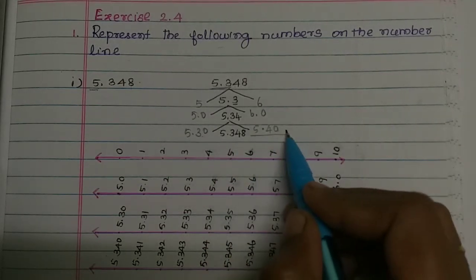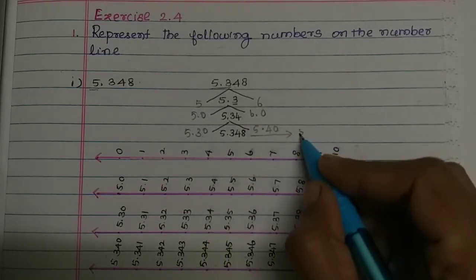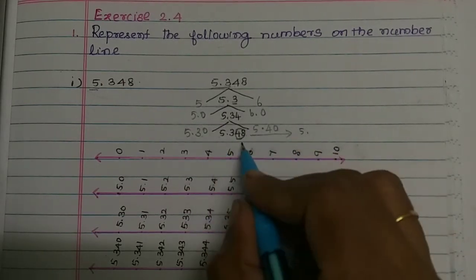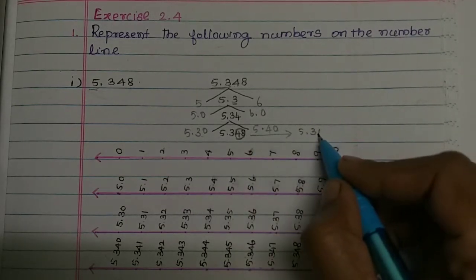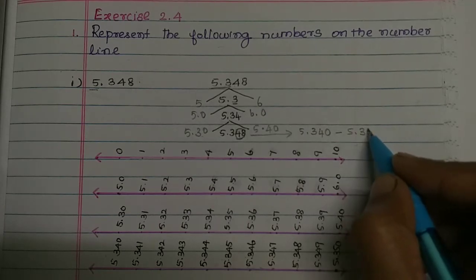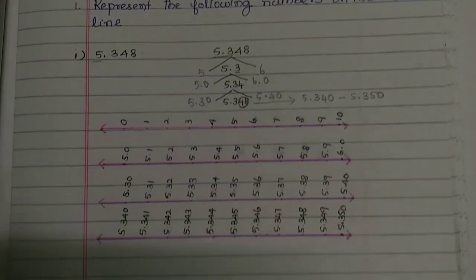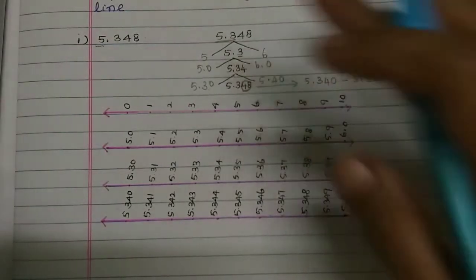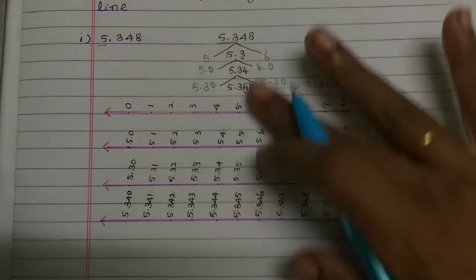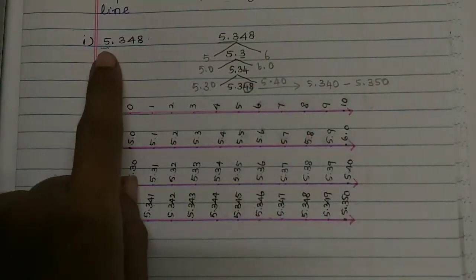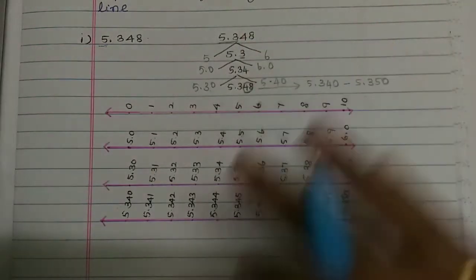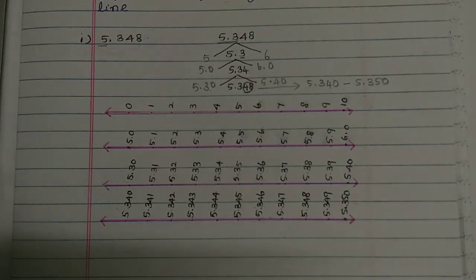The number 5.348 — there is the number 5.48 between 40 and 50, so 5.340 to 5.350. Now I will explain this. This is the opportunity to go to the exam — this is our understanding. The first number is 5 and 6.